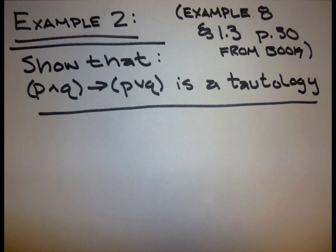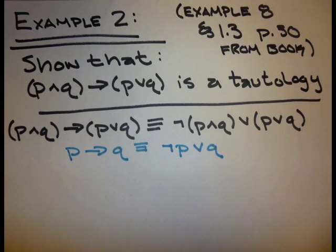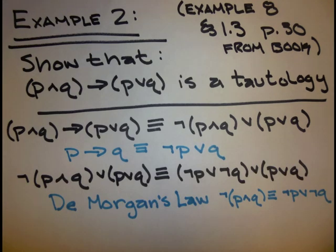Example 2, which is example 8 from section 1.3 of our book: show that (P and Q) then (P or Q) is a tautology — a statement that is always true. Our first step is showing that (P and Q) then (P or Q) is equivalent to not (P and Q) or (P or Q). Using De Morgan's law, the negation of (P and Q) is equivalent to not P or not Q. We use this to transform our statement into (not P or not Q) or (P or Q).